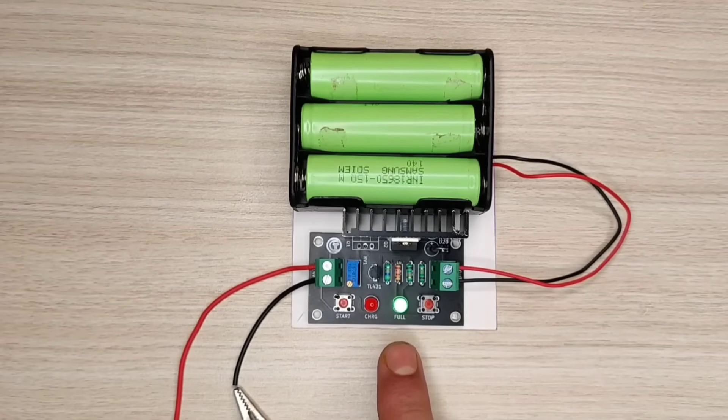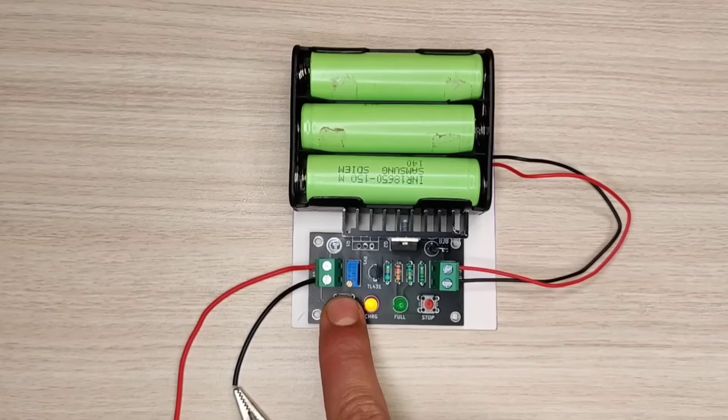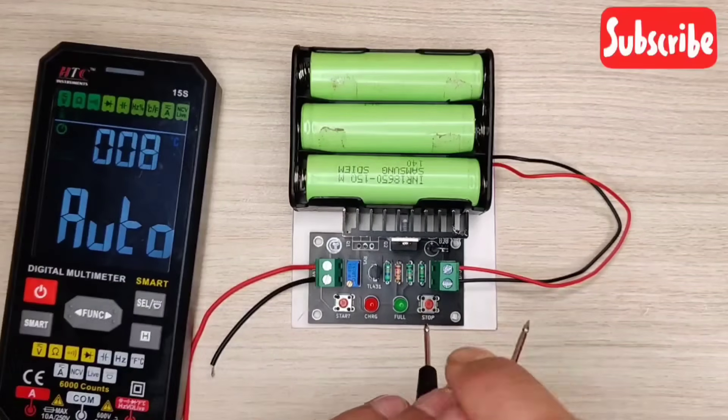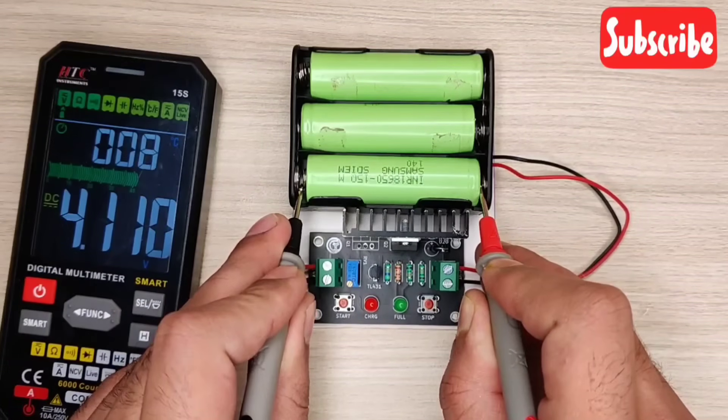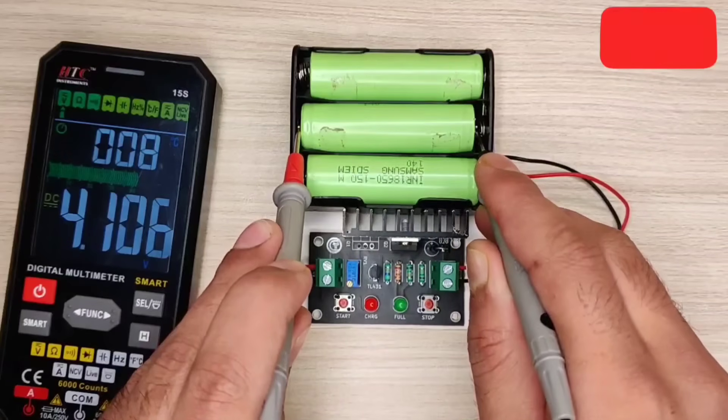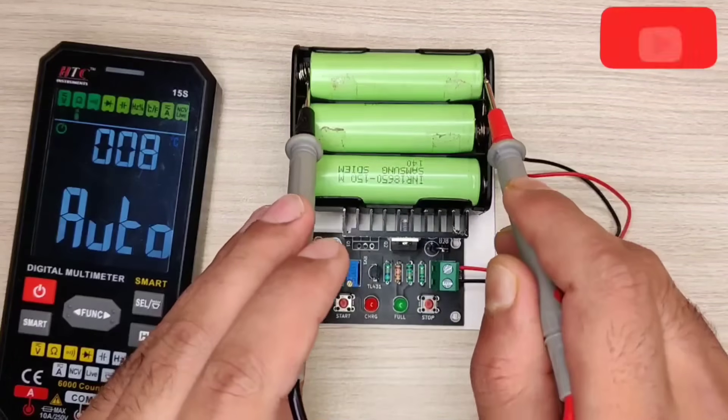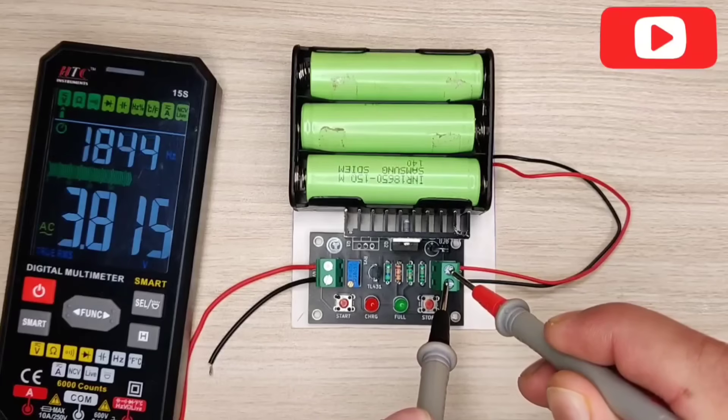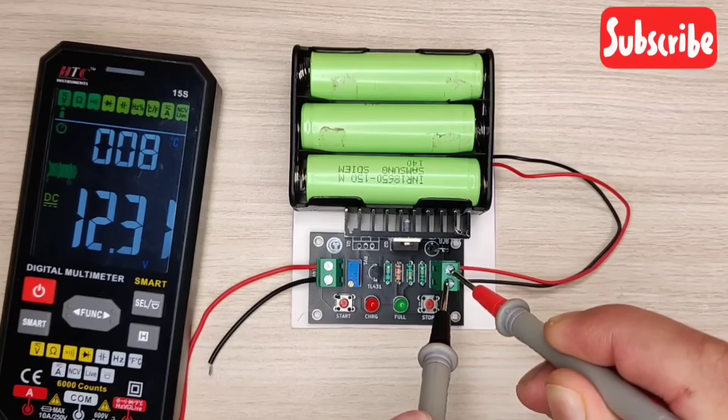As you can see the batteries are fully charged, and charging is cut off. Now let's check the voltage of all batteries. Perfect, all the batteries are fully charged to its capacity. The total output is 12.3 volts from 3 batteries in series.